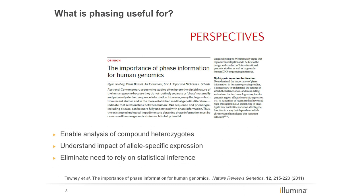Phasing can also be helpful in understanding allele-specific expression. If one variant occurs in a regulatory region, and another in the coding region under regulation by that region, it's important to know the interaction between those variants — and whether they are occurring in cis, on the same chromosome, or in trans, on opposing strands. Presently, one widely used approach to phasing is using frequency data from many individuals in a population and statistically inferring the probability that variants occur together in tandem. This is an indirect method of phasing and may not truly represent what is happening in your genome of interest. Phasing using molecular methods directly from sequence data eliminates the need to rely solely on statistical inference.